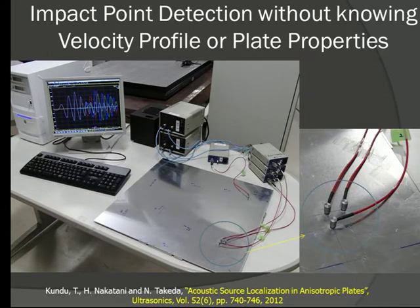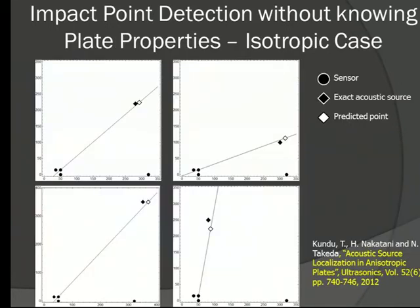We carried out this experimentally to see how well it performs. Here is a cluster of three sensors; for an isotropic plate we only need four sensors total. This is for an aluminum plate — the white points are the predicted impact locations and the black points are the actual impact points. The predictions are quite good.